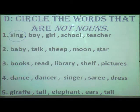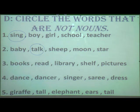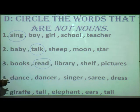Second group: baby, talk, sheep, moon, star. Baby, sheep, moon, and star are nouns, but talk is an action word — it is a verb. Circle 'talk.' Third group: books, read, library, shelf, pictures. Read is also an action word — it is a verb — so it is not a noun. Circle 'read.'